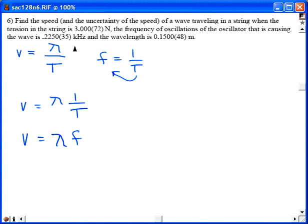So v can always be expressed as just lambda times f. And in this problem we're given lambda and we're given f, and it looks like this tension in the string is irrelevant for our purposes. So let's go ahead and substitute the values that they gave us.